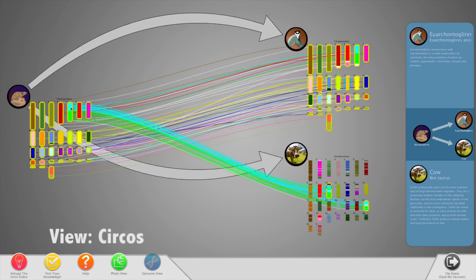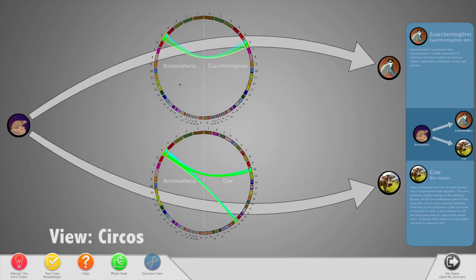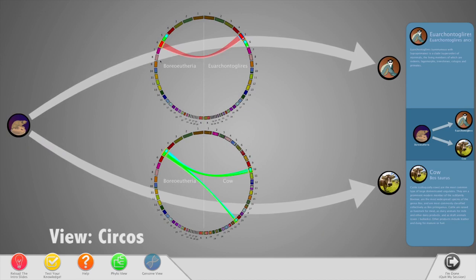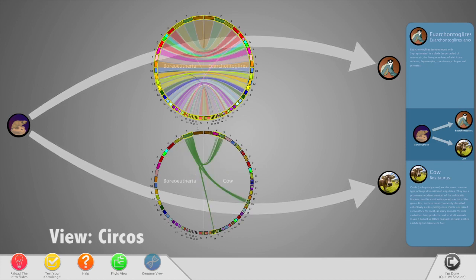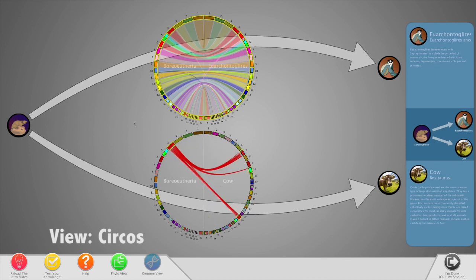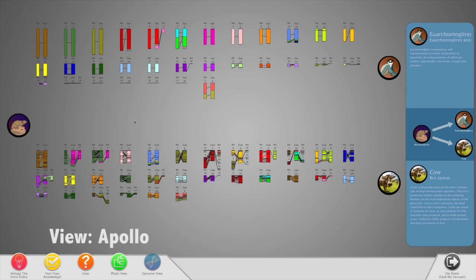The third view is based on Circos, a widely used genomic research technique. Chromosomes are arranged in arcs around a circle, with ribbons showing the preserved syntony blocks between species. The last view is based on another industry technique called Apollo. In the Apollo view, there is no interaction with chromosomes since all links are already shown in its standard view.